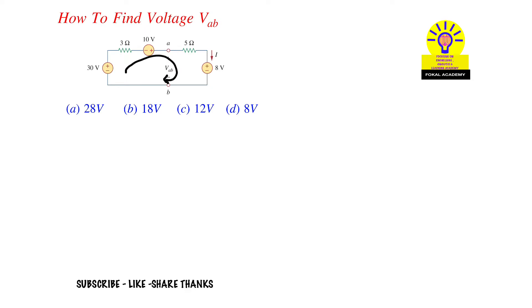We know that now here current was from minus to positive, nothing but minus 30 plus in this 3 ohm resistor the voltage is resistance into current, that is 3 into I, and here minus is there so minus 10 plus 5I and here plus plus 8 volts, that's equal to zero.